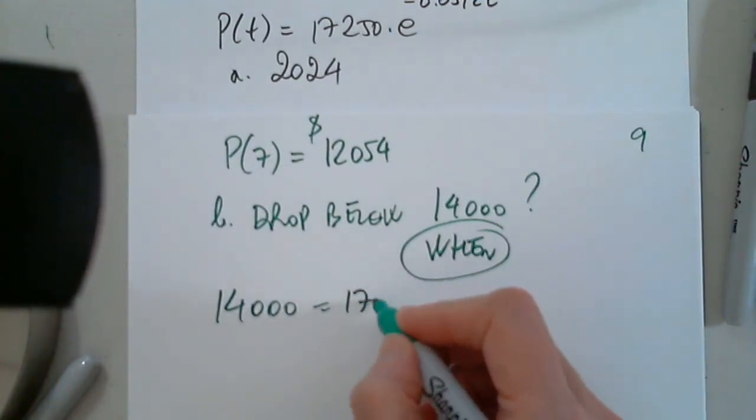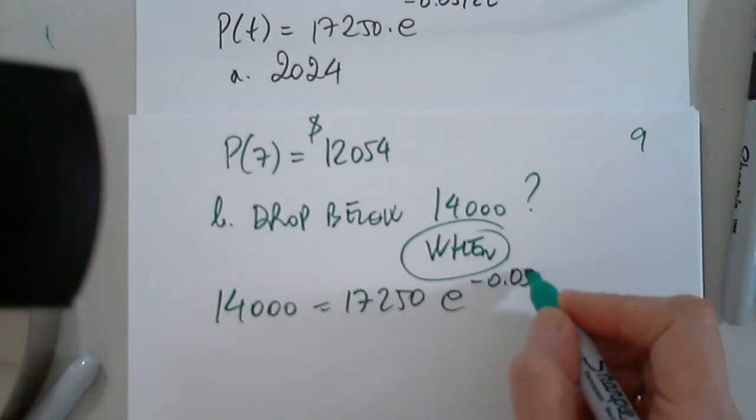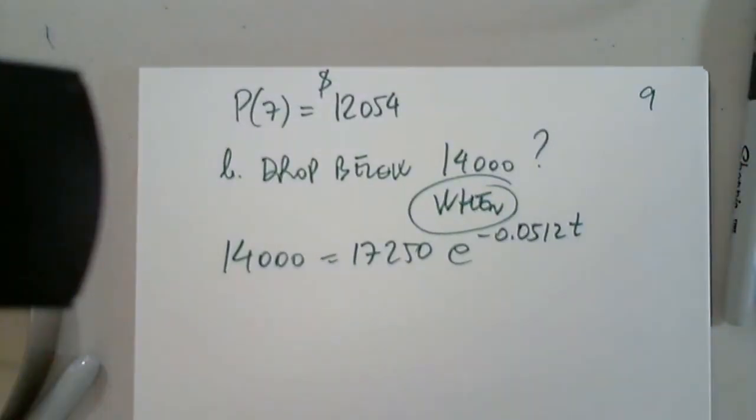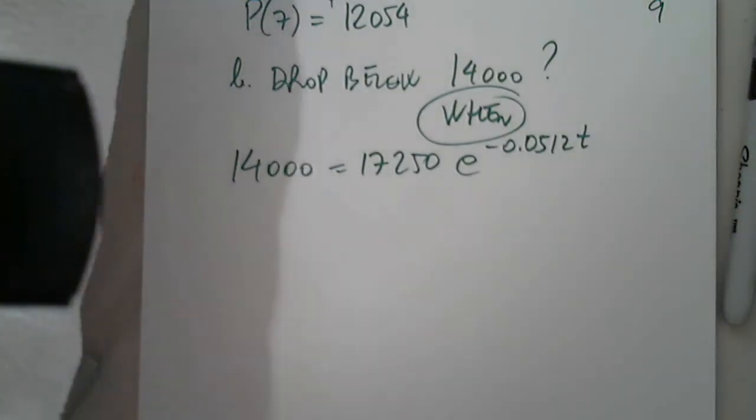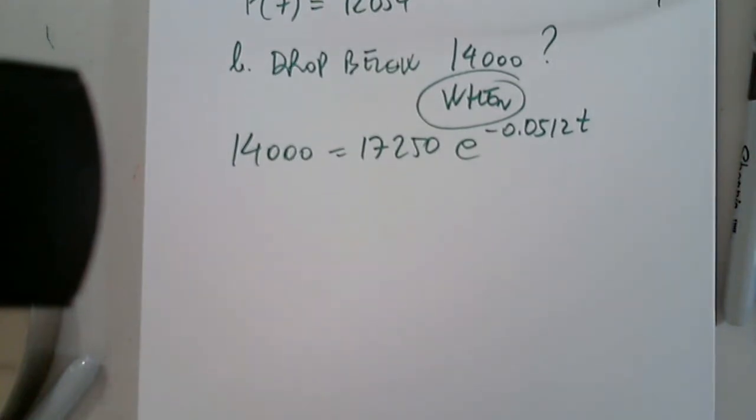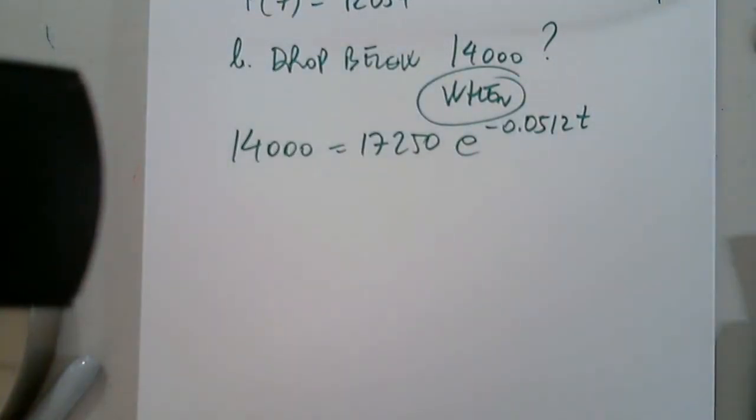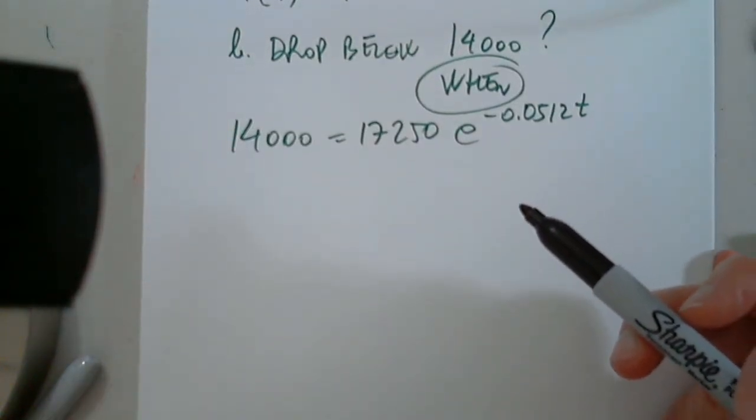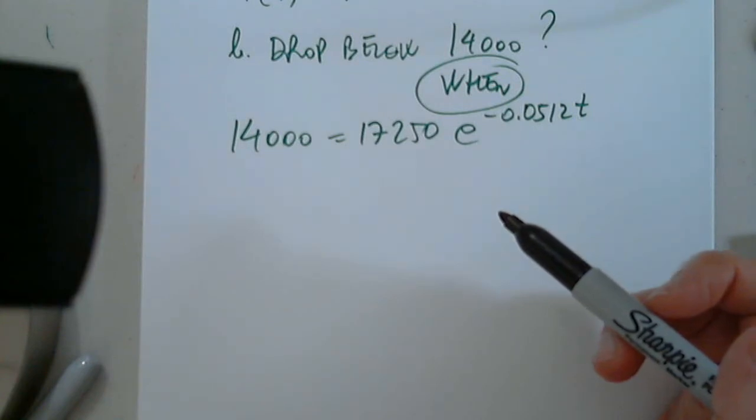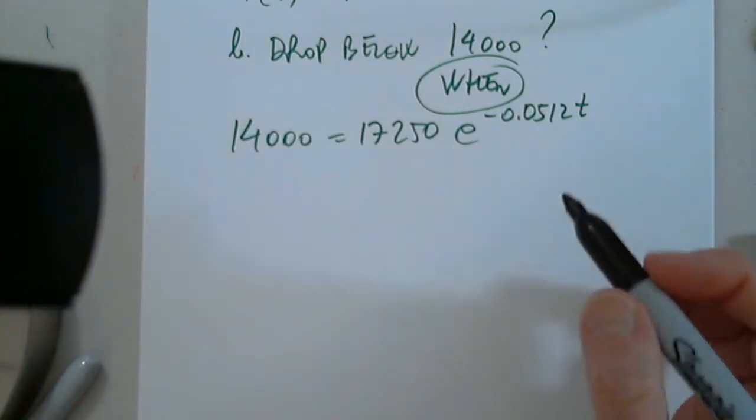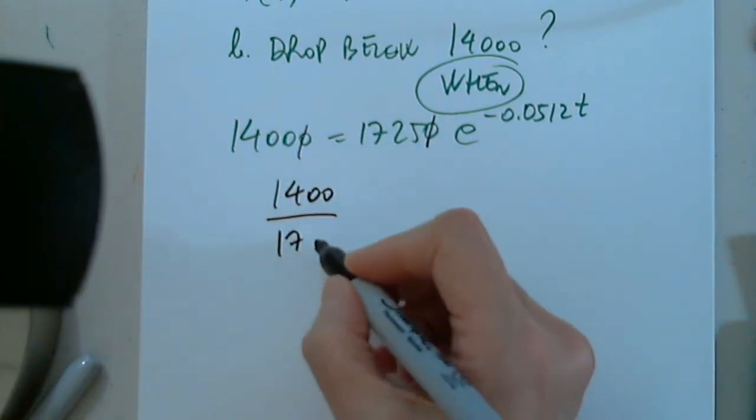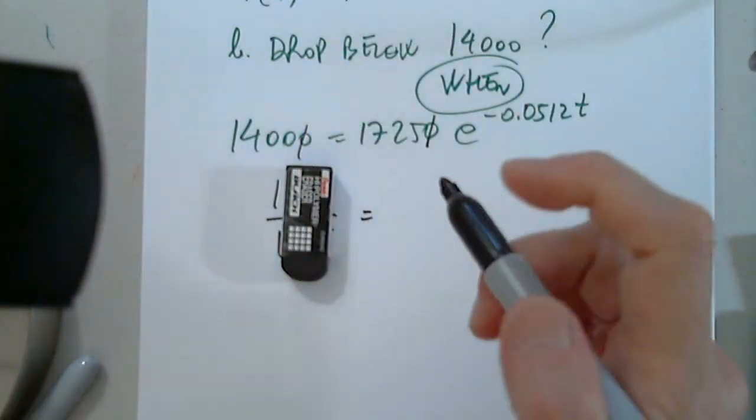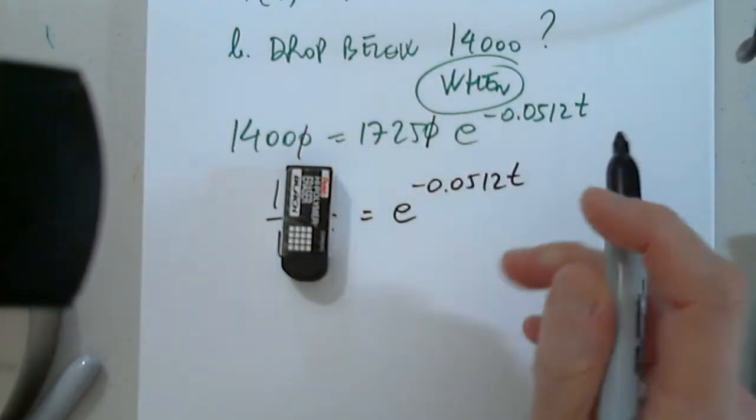So 14,000 equals 17,250·e^(-0.0512t). Excellent. So how do I proceed? We have to solve for T. How do we do that? Would you divide by 17,250? Absolutely. So remove a zero and we have 1400 over 1725. Don't even look at it. I know it's an ugly number.